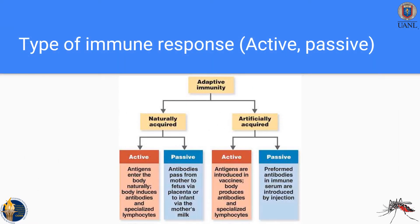Now we'll look at the type of immune response, which can be active or passive. First, we need to know what adaptive immunity is — it is divided into two sections: naturally acquired and artificially acquired. In the naturally acquired section, there are both active and passive types. In the active section, antigens enter the body naturally — bacteria or antigens are transmitted through natural media.